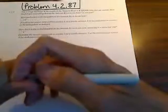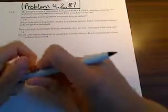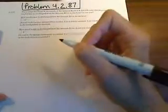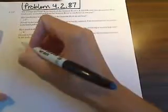Okay, so this is problem 4.2.87. We can't read it real well there, but I'll read it to you. It says the average discharge at the mouth of the Amazon River is 4,500,000 cubic feet per second. They want to know how much water is discharged from the Amazon River in one hour and in one year.